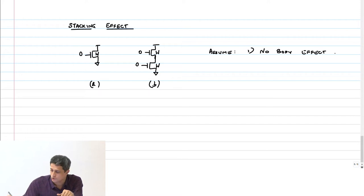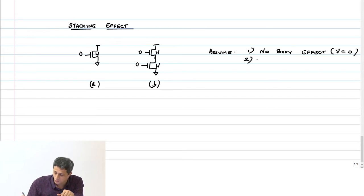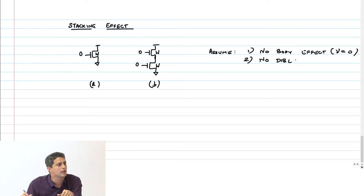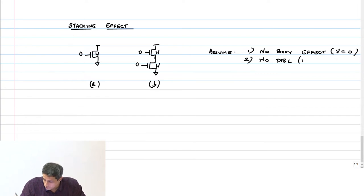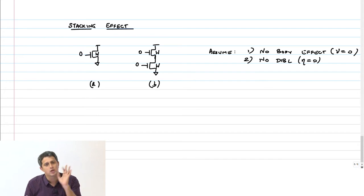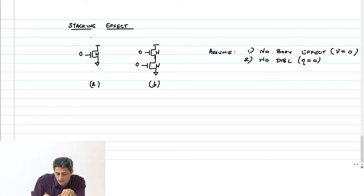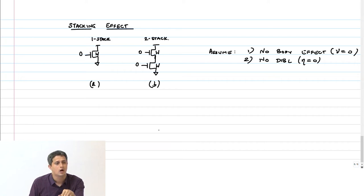We will come to all this later. With no DIBL, V_T does not change with V_DS. So we can evaluate what the leakage current through the stack is. Configuration A is a single stack, configuration B is a two-transistor stack. How do I evaluate the leakage current through that two-transistor stack?